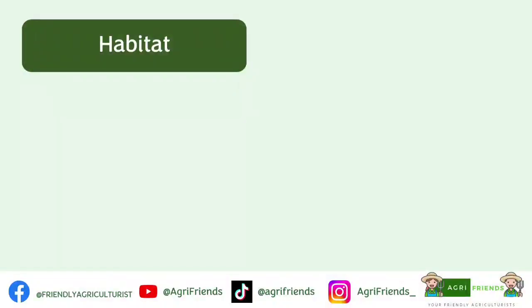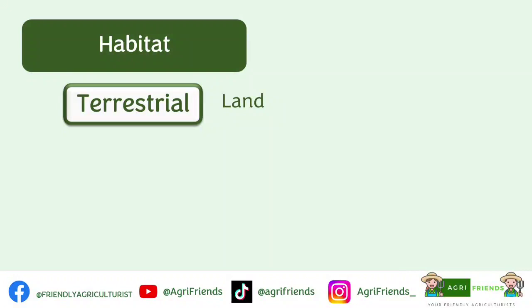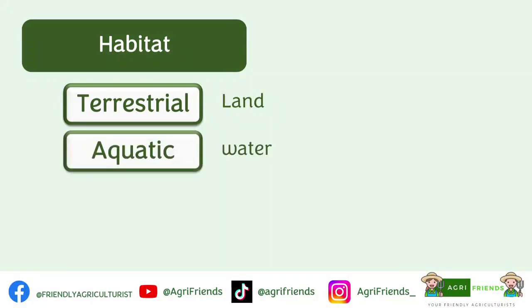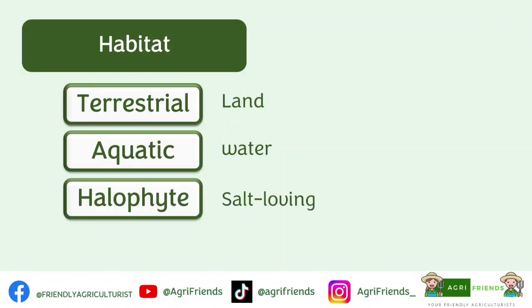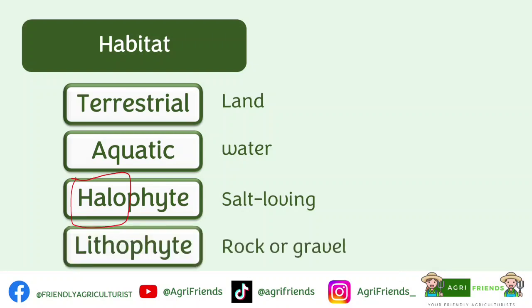Classification of crops based on habitat. We have terrestrial — those that grow on land; aquatic — those that grow on water; halophytes — the salt-loving plants, from the word 'halas' meaning salt; and lithophytes — plants that grow on rock or gravel, from the Greek word 'lithos' meaning stone.